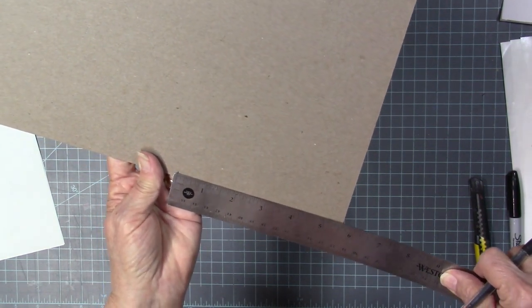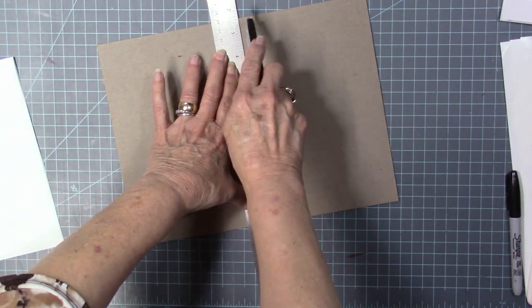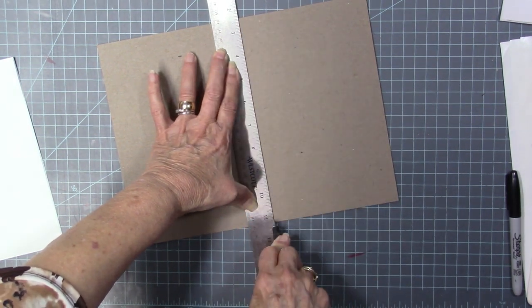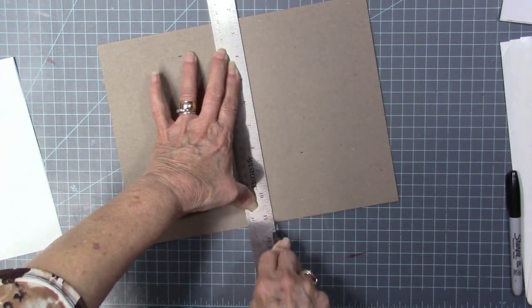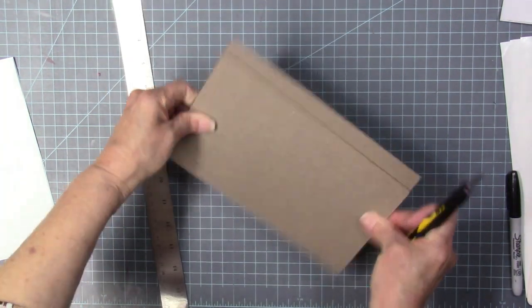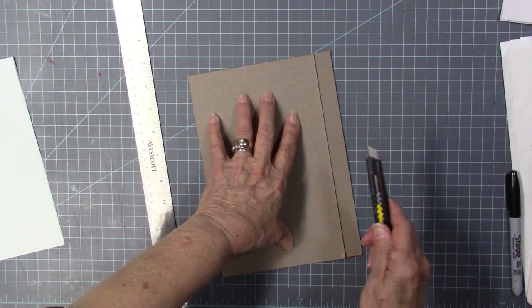So my rule of thumb is measure twice and then cut once. I'm just using a little exacto knife, make sure I've got good sharp blades, and I have to score through a couple of times to get it to cut through. So I'm going to cut two of these pieces for the front and the back, and then that little extra piece will be for the spine.